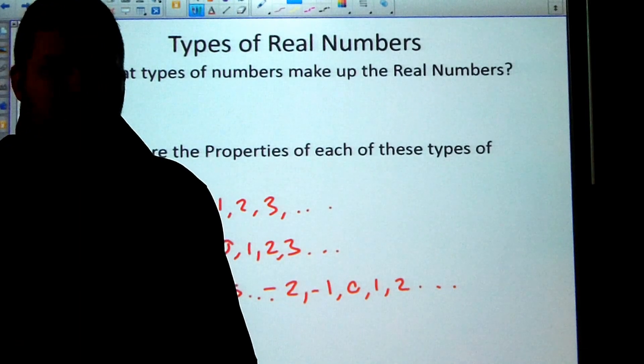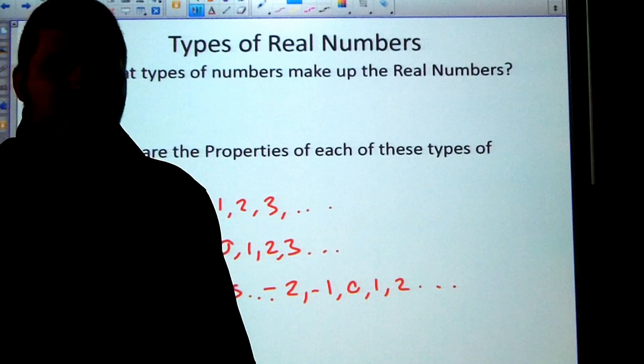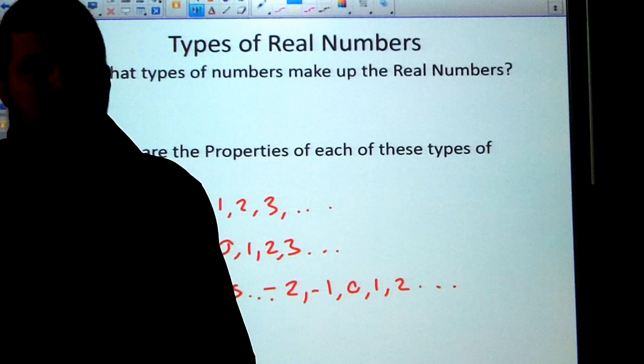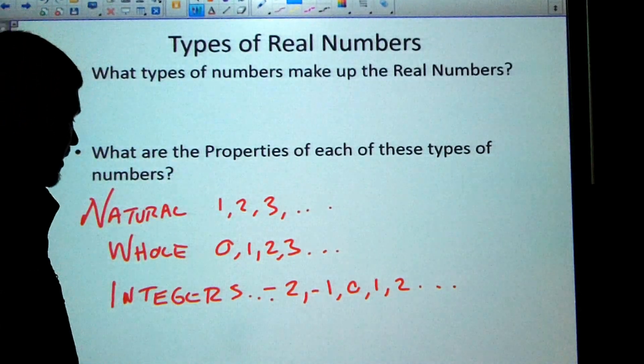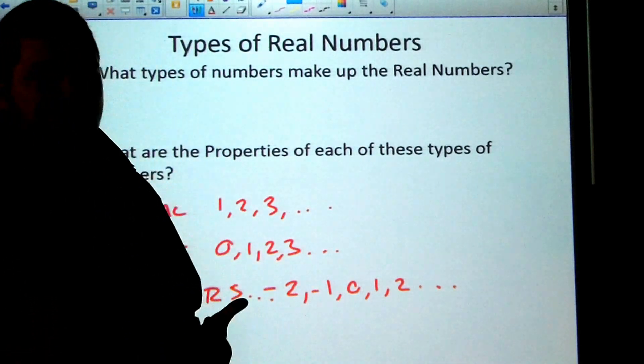And then finally, the rational numbers, those are fractions, or decimals that end nicely. They terminate like .25 or they have a pattern like .212121, something like that.